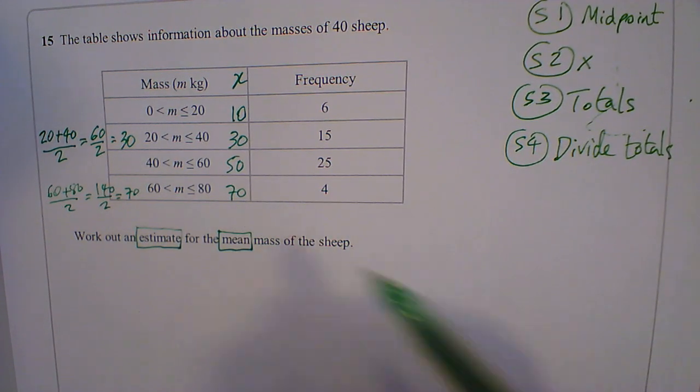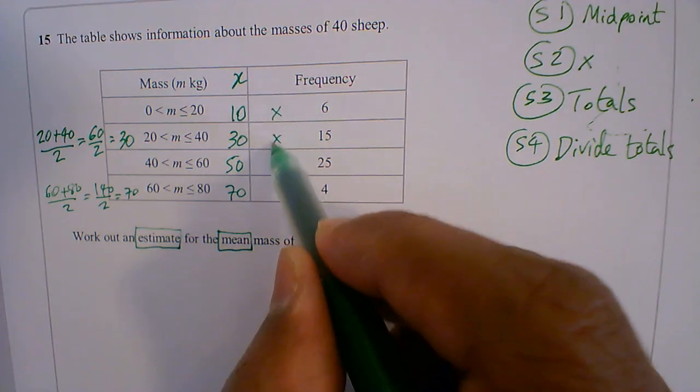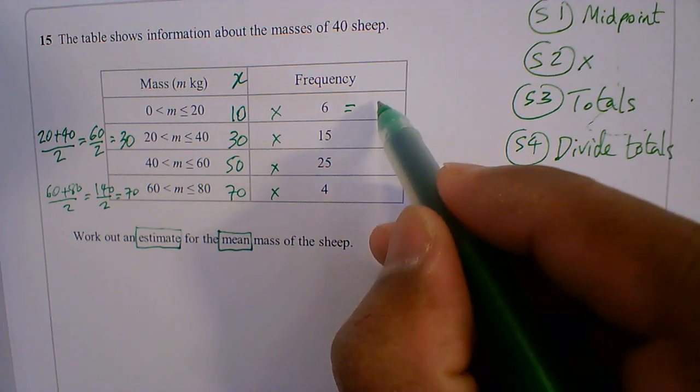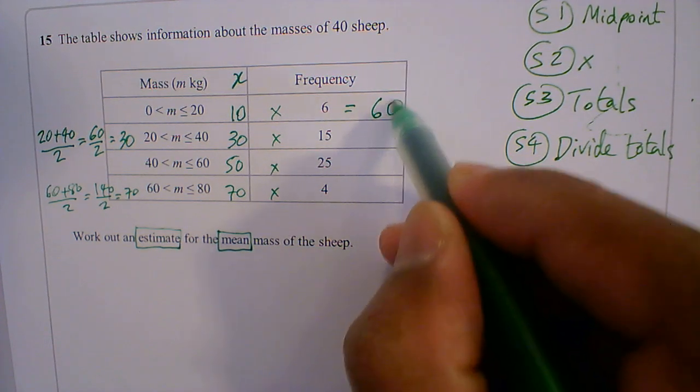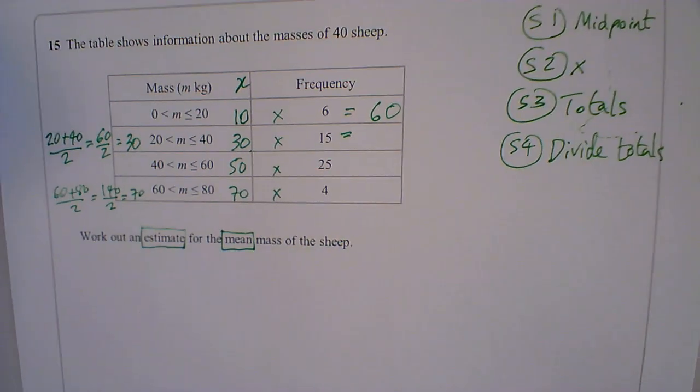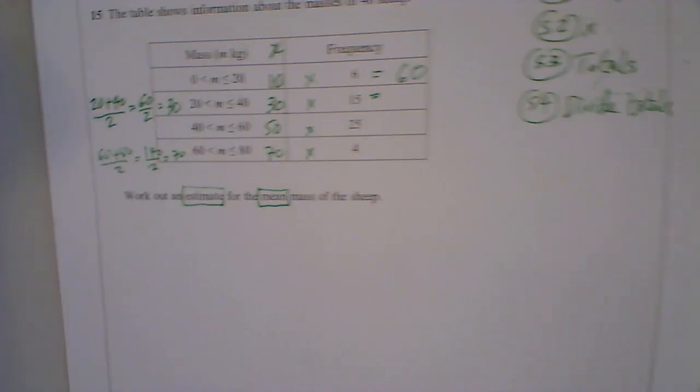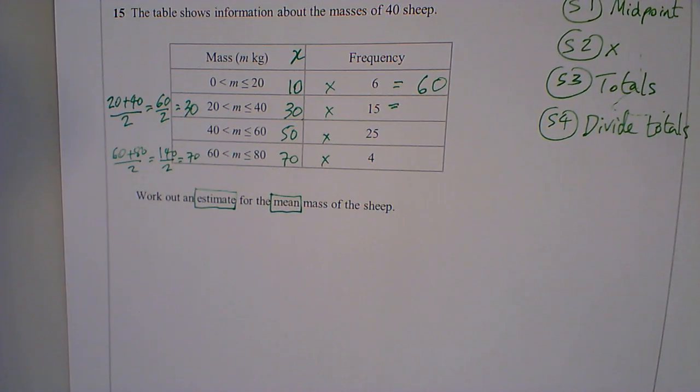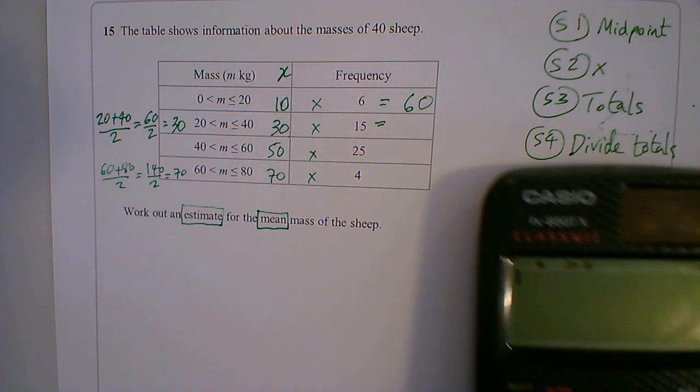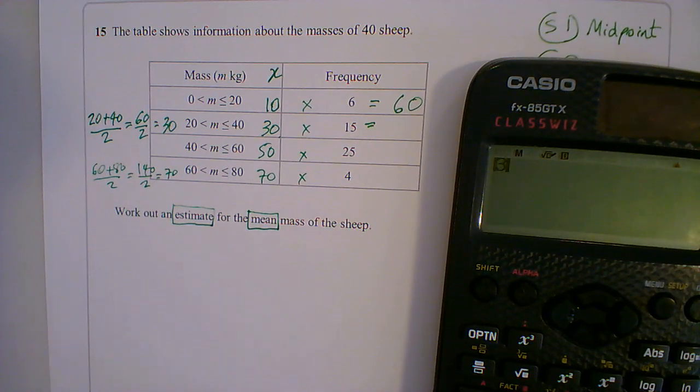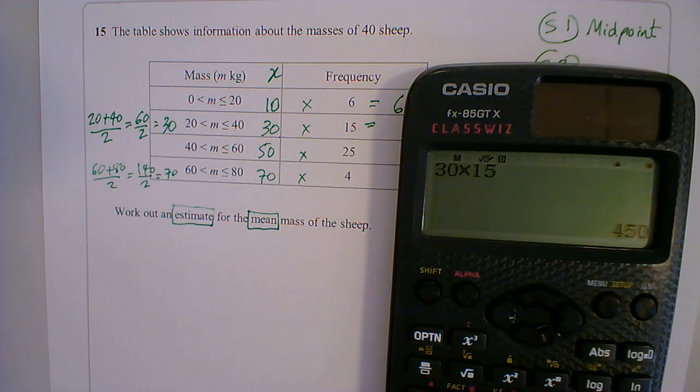Now that I've got it, I will now multiply these. So 10 times 6 gives me 60. 30 times 15. I'm going to use my calculator. Get my calculator out. So 30 times 15 gives me 450.